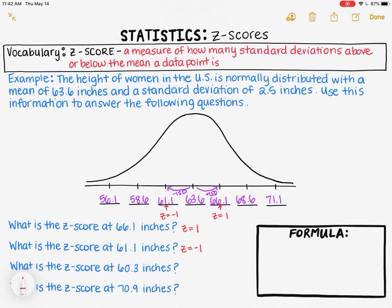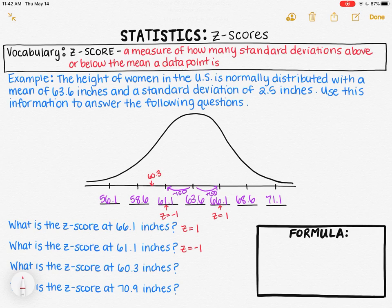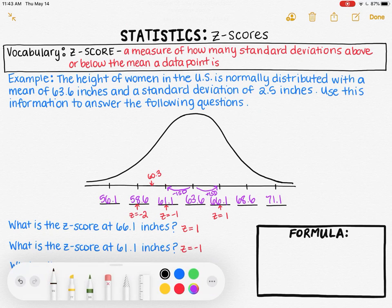The next question asks: what is the z-score at 60.3 inches? Looking at the curve, 60.3 is not labeled exactly anywhere. We can see that 61.1 is one standard deviation below the mean, and 58.6 is two standard deviations below, so 60.3 must be somewhere in between. We can determine that 61.1 has a z-score of negative one and 58.6 has a z-score of negative two, so 60.3 must have a z-score between negative one and negative two. To find the exact z-score, we need a formula.